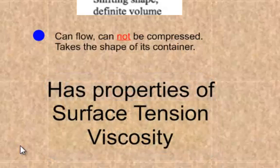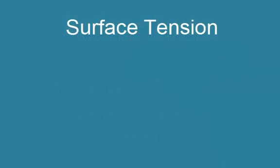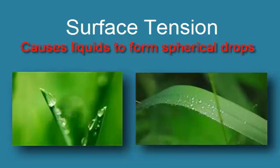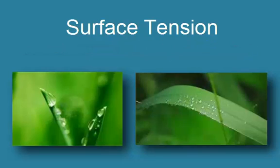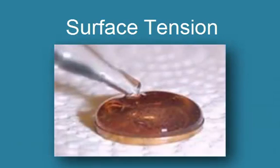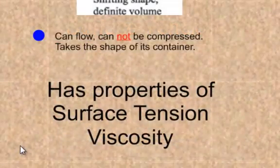Liquids have the properties of surface tension and viscosity. Surface tension is going to be the force that makes the particles in a liquid stick together. It causes liquids to form spherical drops, like beads of water on a grass blade. We're going to do a fun mini lab where you try to drop water on the head of a penny and see how many drops you can form. You get to see how the liquid forms a bubble on top — that stickiness is surface tension, and only liquids have that property.